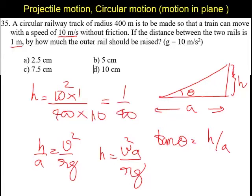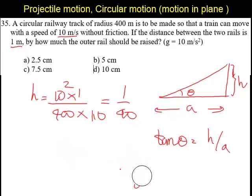So 1 by 40 means it is going to be 2.5 centimeters. So h in this case is going to be 1 by 40 meters or 2.5 centimeters. So the answer is 2.5 centimeters.